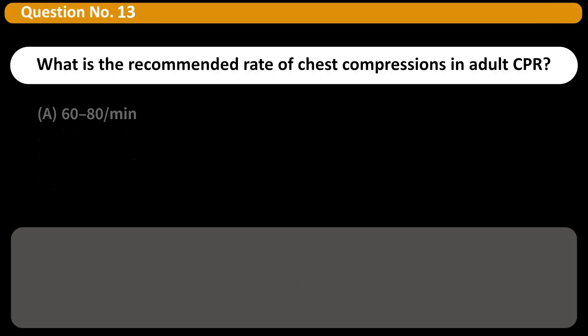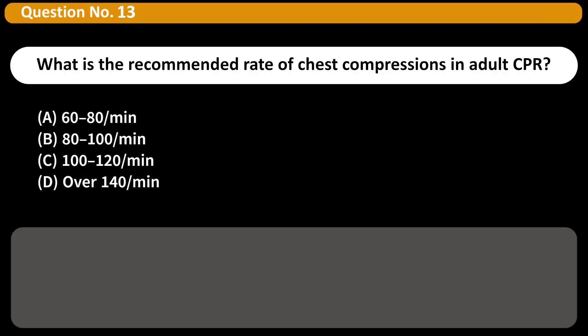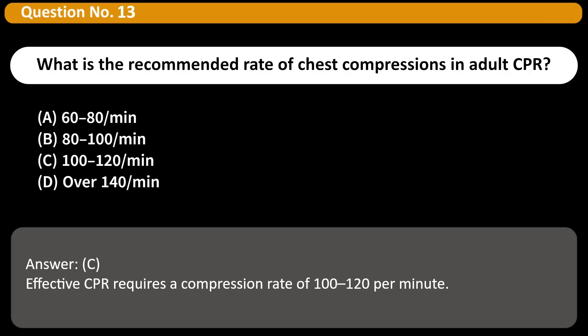What is the recommended rate of chest compressions in adult CPR? A. 60-80/min. B. 80-100/min. C. 100-120/min. D. Over 140 per minute. Answer: C. Effective CPR requires a compression rate of 100 to 120 per minute.